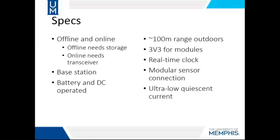With that in mind, the following specifications have been decided on. In addition to the online and offline nodes, a base station is also required to interface between the online nodes and the monitoring station. As a use case for this device is remote logging, the device must be capable of running from a battery supply as well as a DC supply should the node be situated within or near a facility that can provide power. In order to get a decent distance between real-time nodes, a range of approximately 100 meters has been decided. In order to timestamp the data points, an integrated real-time clock module will also be required. As this is intended to be an extendable sensor platform rather than an application-specific device, the device must support a modular sensor connection so that an end-user may easily modify the attached sensors.